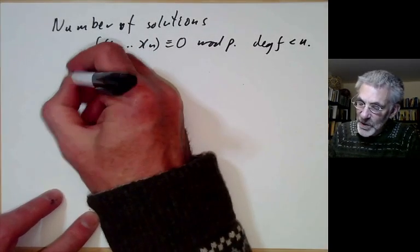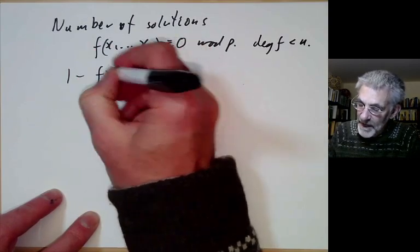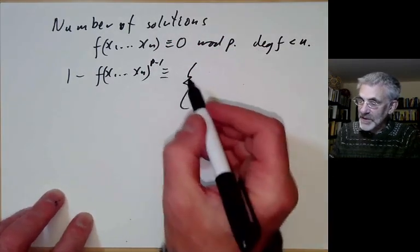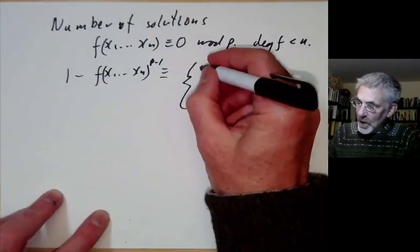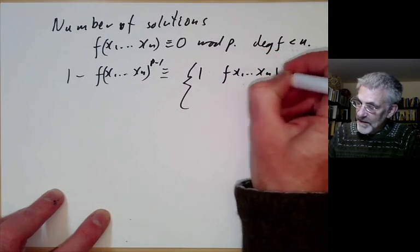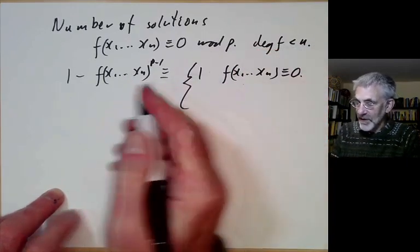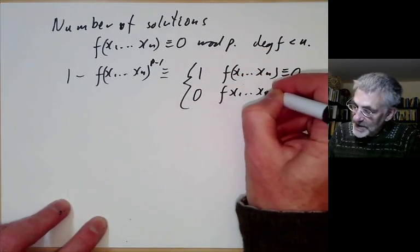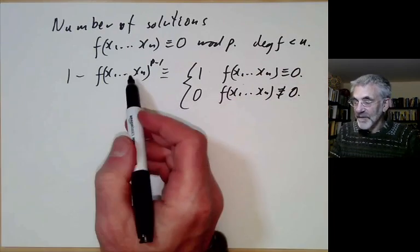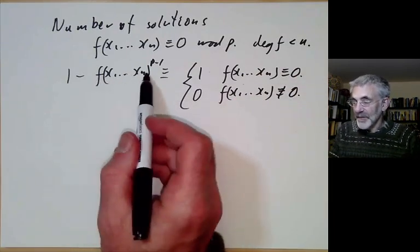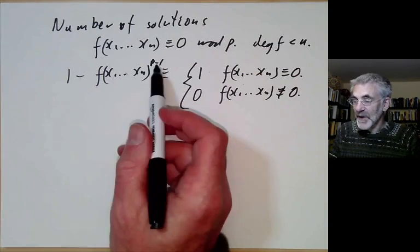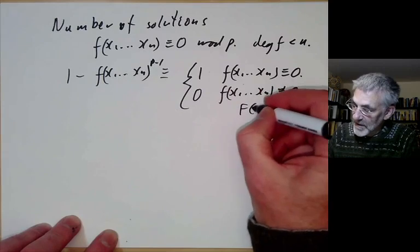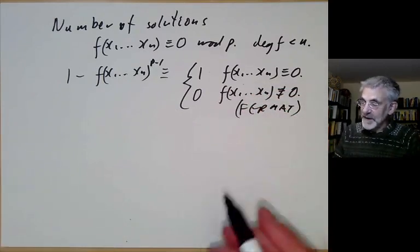We notice that (1 - f(x1...xn))^(p-1) has the following very simple values. It's congruent to 1 if f(x1...xn) is congruent to 0, rather obviously. On the other hand, it's congruent to 0 if f(x1...xn) is not congruent to 0, because by Fermat's theorem, if this is non-zero, then the p-1 power is just 1, so this is 0. So this follows by Fermat's theorem, which seems to be used every single lecture.